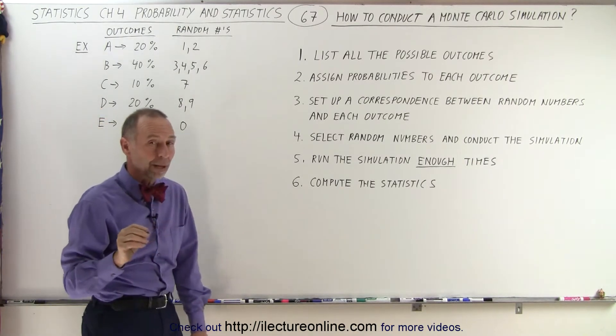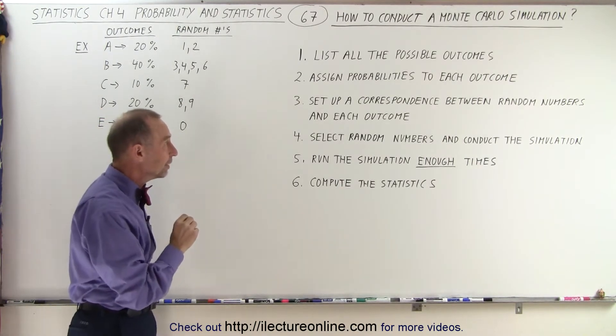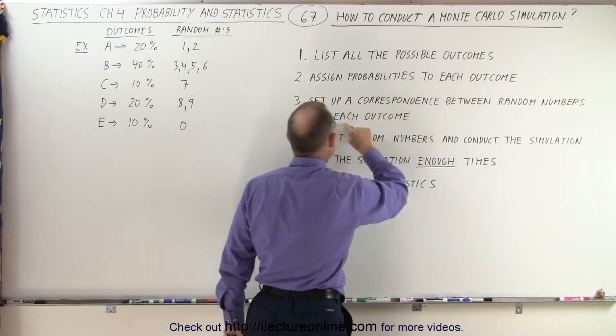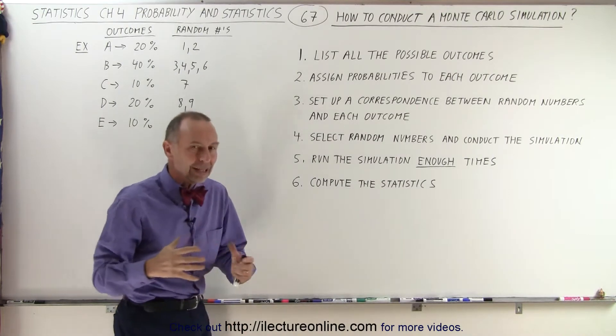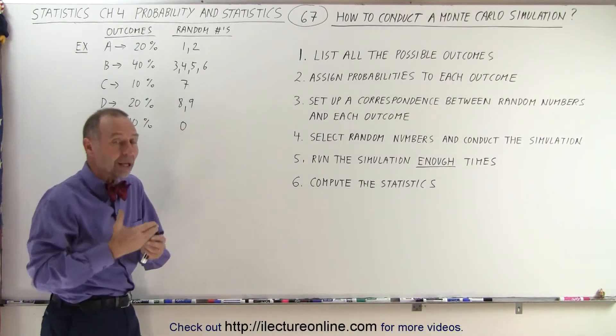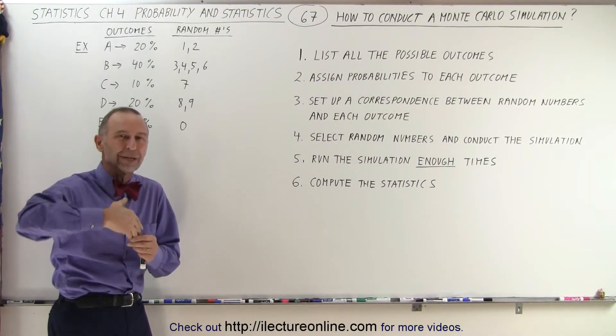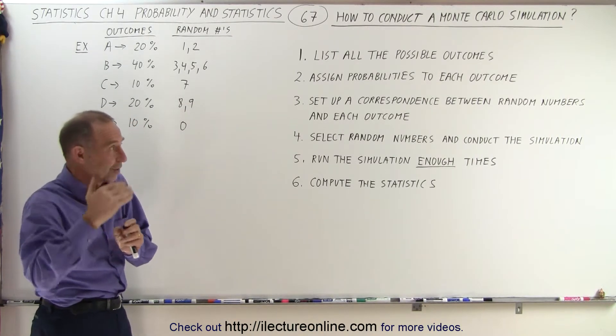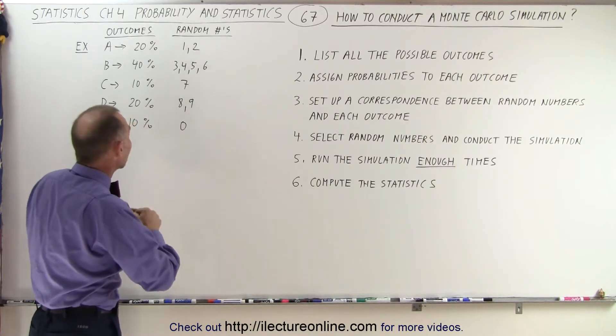Then, and this is probably a really important aspect of it, set up a correspondence between random numbers and each outcome. So let's say that we use a random number generator that will give us a number between 0 and 10. And so then we want to assign each of those numbers between 0 and 10 to each of the outcomes.